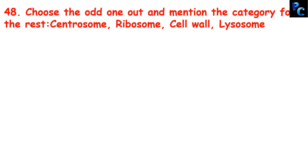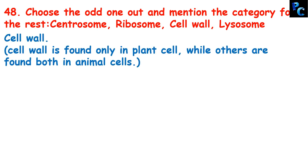Choose the odd one out and mention the category for the rest: centrosome, ribosome, cell wall, lysosome. The answer is cell wall. Cell wall is found only in plant cells, while centrosome, ribosome, and lysosomes are found in animal cells. So the odd one out is cell wall.